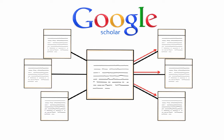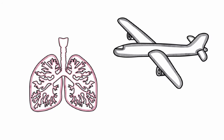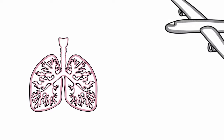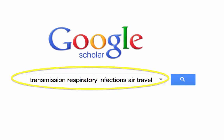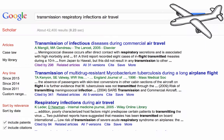Let's see how we can access forward article networks by first finding that perfect article. What if we're interested in researching the spread of respiratory infections through air travel? A search for transmission respiratory infections air travel returns a list of resources including many articles.